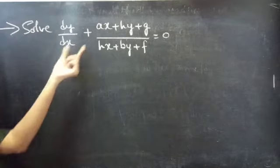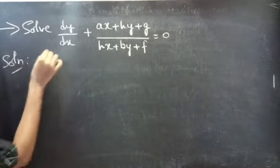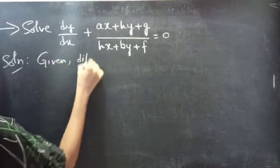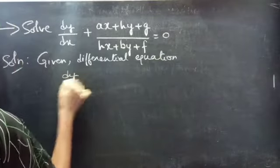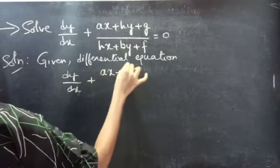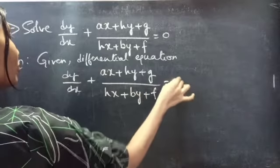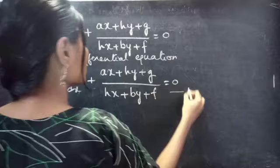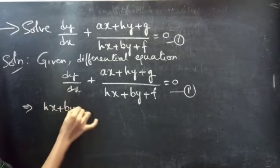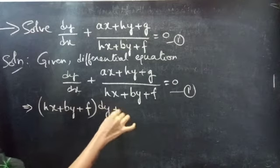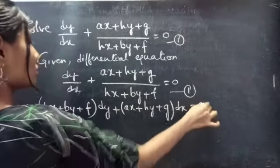Problem: solve dy/dx plus (ax plus hy plus g) divided by (hx plus by plus f) equals 0. Given this differential equation, we can rewrite it as (hx plus by plus f) dy plus (ax plus hy plus g) dx equals 0.